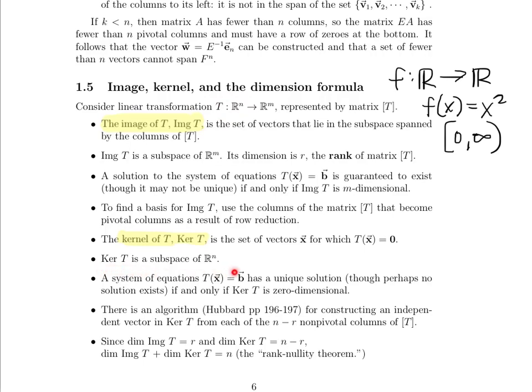The kernel of T is a subspace of R^n — it lives in the domain; the image lives in the codomain. A system T·x = b has a unique solution if and only if the kernel of that transformation is zero-dimensional. When we say zero-dimensional, that means the only vector in the kernel is the zero vector. That's not always true for all matrices, as you'll see.